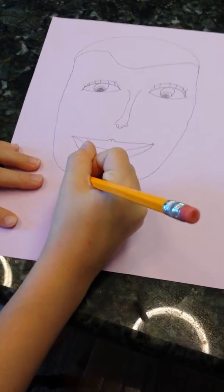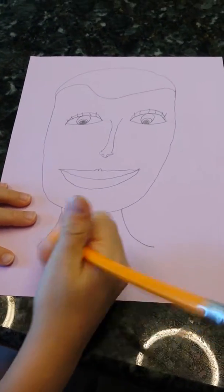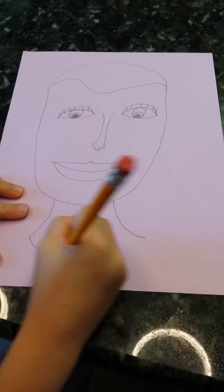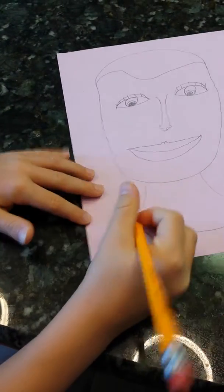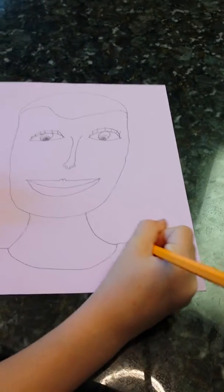And then we can add the neck. And then we're going to add the little thing where your shirt starts. Then the shoulders. Then the other shoulder.